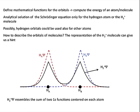As can be seen in the figure, the black line represents the wave function of H2 plus molecule, and that resembles more or less the sum of two 1s functions centered on each atom.